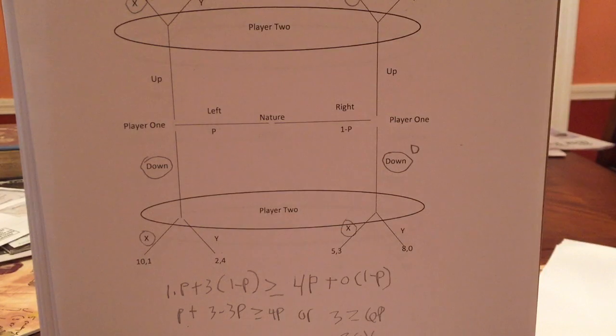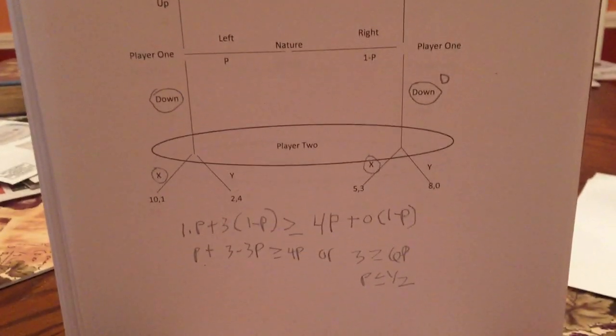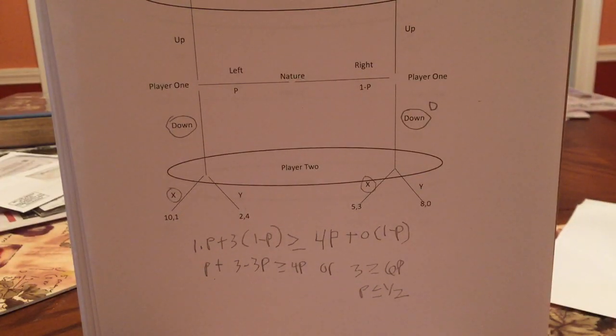So there is, there we go. So there is a pooling equilibrium if P is less than or equal to one half. And I'll thank you and please now, watch up to video 22 and the other series and do homework seven. Goodbye.